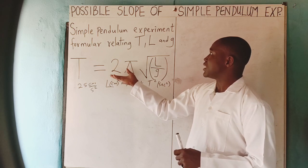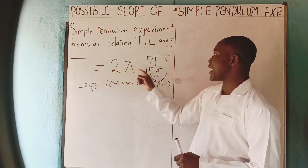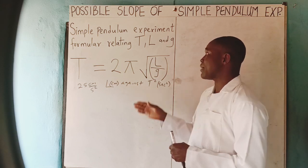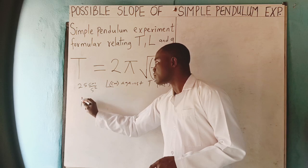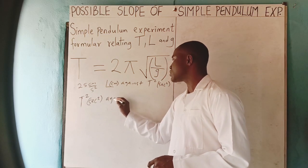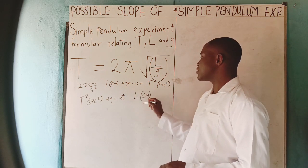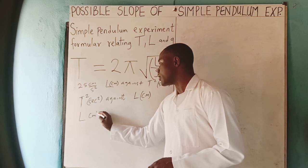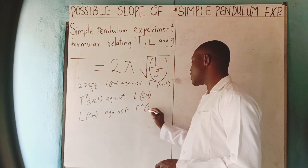Look at the formula relating T, L, and g in simple pendulum: T equals 2π times the square root of L over g. There are two possible graphs one can be asked to plot in a simple pendulum experiment. That is a graph of T squared (in seconds squared) against L (in centimeters or meters), or a graph of L (in centimeters or meters) against T squared (in seconds squared).